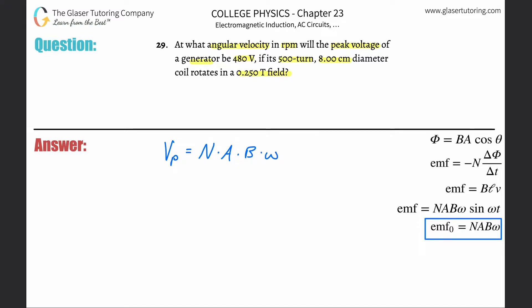Angular velocity. Remember in physics, this is going to be in radians per second. We might have to do a conversion at the end because they want it in revolutions per minute. But the goal here is to solve for omega.